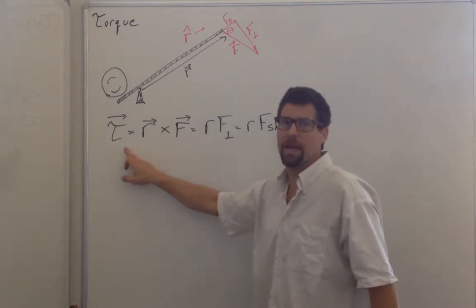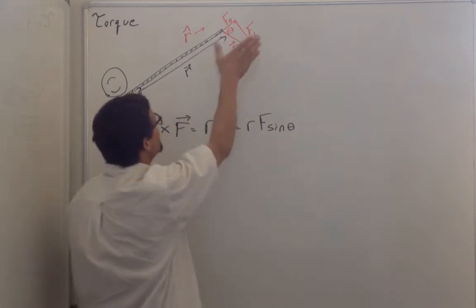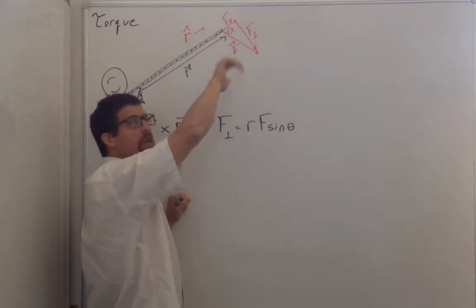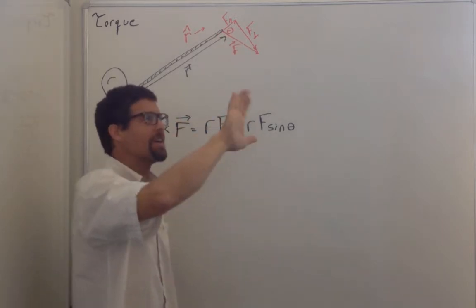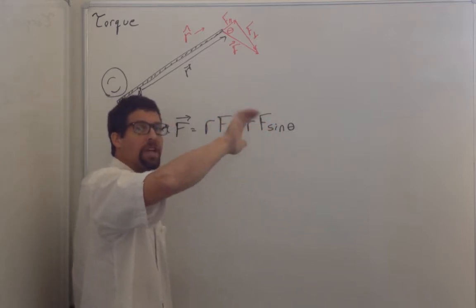Torque also has a direction. It can be determined with your right hand. Radius cross force gives me a torque in this direction. My thumb points the direction of the torque, but my fingers describe the rotation.